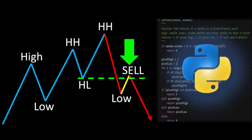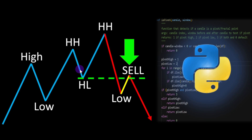Today we are coding the Change of Character indicator, also called the Change of Pattern. This typically happens when you have a clear pattern showing higher highs and higher lows that changes at some point, indicating a potential change in the trend. We can automate this detection in Python and backtest it in a full strategy in this video.